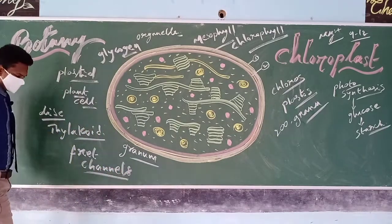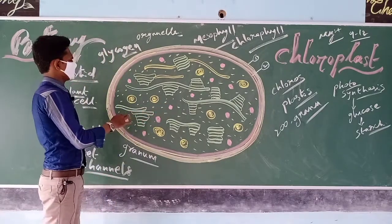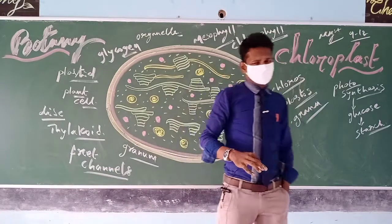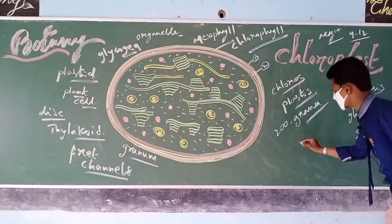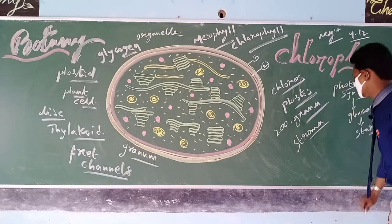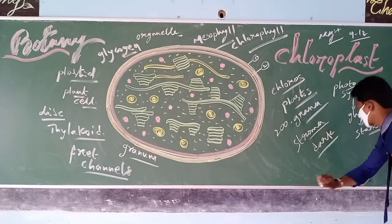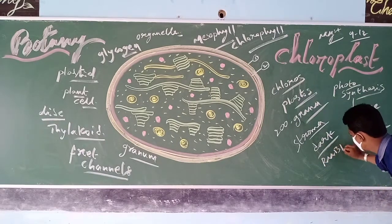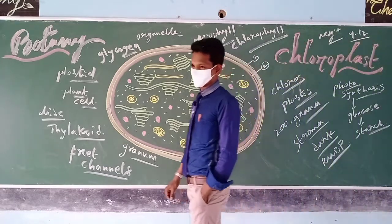All grana are floating or suspended inside the chloroplast in a jelly-like substance called the matrix, known as stroma. Inside the stroma, the dark reaction takes place, and the special enzyme called RUBP — ribulose bisphosphate, also called Rubisco — is present.